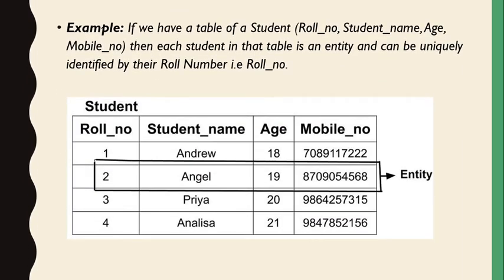For example, if we have a table of students with properties: roll number, student name, age, and mobile number — these are the properties of a student. Each student record in the table is an entity and can be uniquely identified by their roll number. So a student with roll number two, student name, age, and mobile number — all these records are known as an entity and are differentiated from other students.